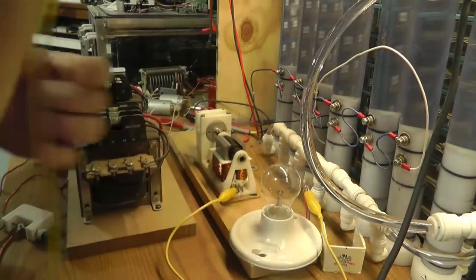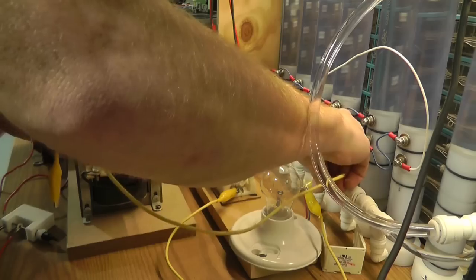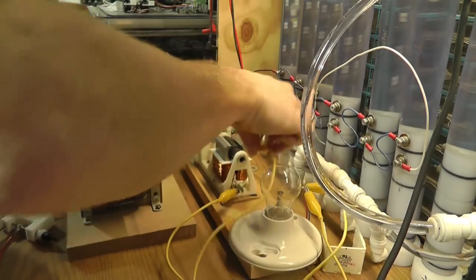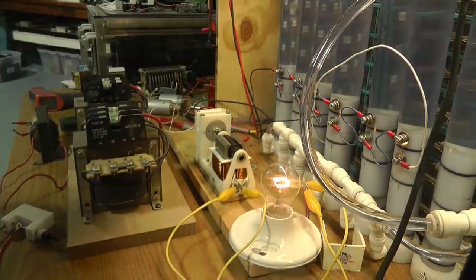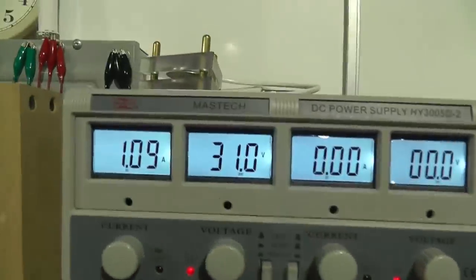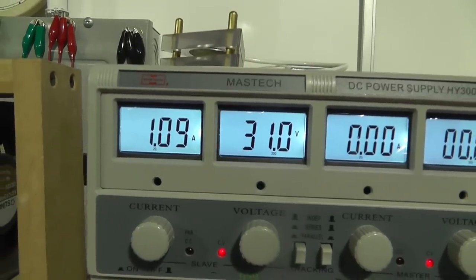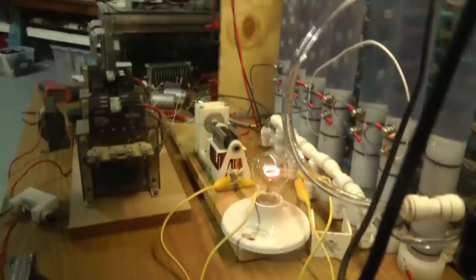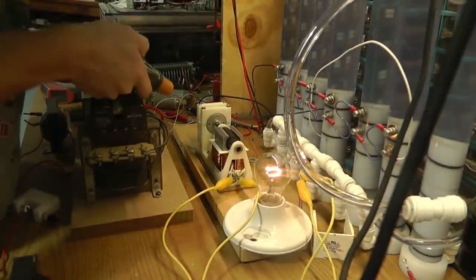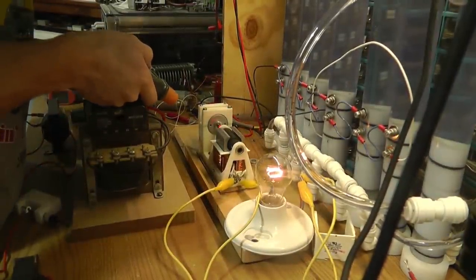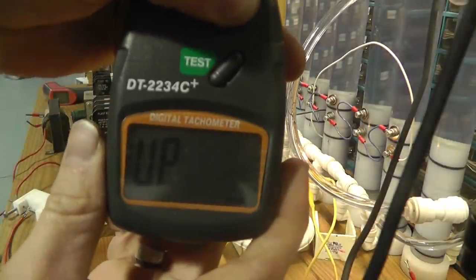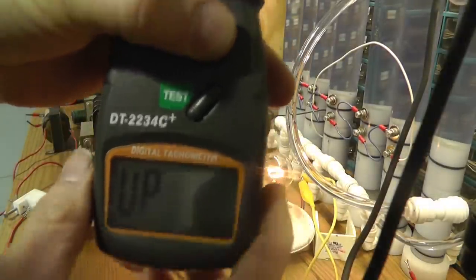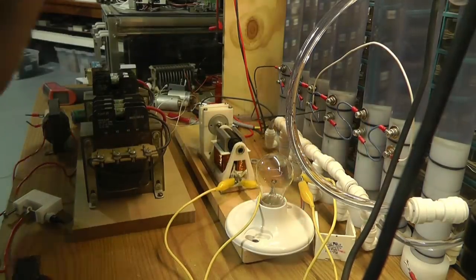Now with a 60 watt light bulb. 1.09 amps. 46.26 RPM.